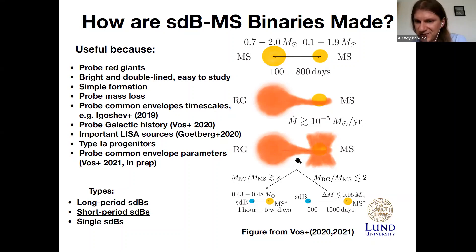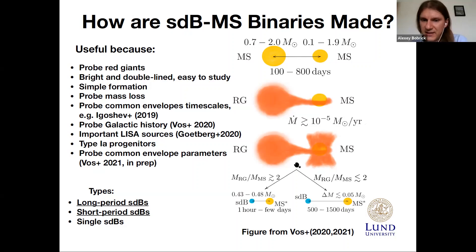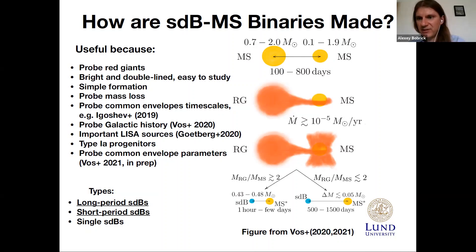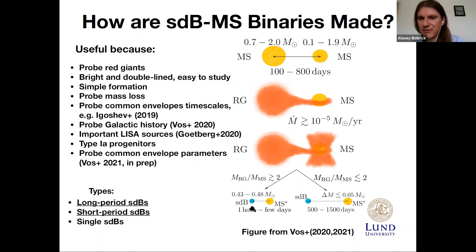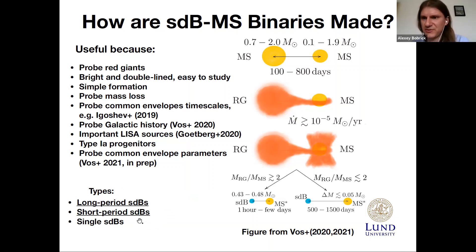There are two possibilities. If the red giant's mass did not exceed the companion mass by more than a factor of two, mass transfer proceeds in a stable fashion, resulting in long-period subdwarf B-binaries on orbits between 500 and 1500 days. In the other case, if the red giant had mass much larger — more than a factor of two — the binary goes through a common envelope phase, wherein the companion spirals through the red giant's envelope and helps unbind it, resulting in short-period subdwarf B-binaries on very tight orbits of between an hour and a few days. A third type comes from two helium white dwarfs merging.